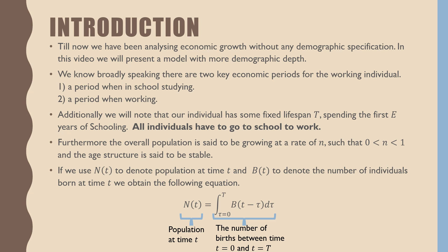Furthermore, the overall population is said to be growing at the rate N, such that N is between 0 and 1, and the age structure is said to be stable. If we use N(t) to denote the population at time t and B(t) to denote the number of individuals born at time t,